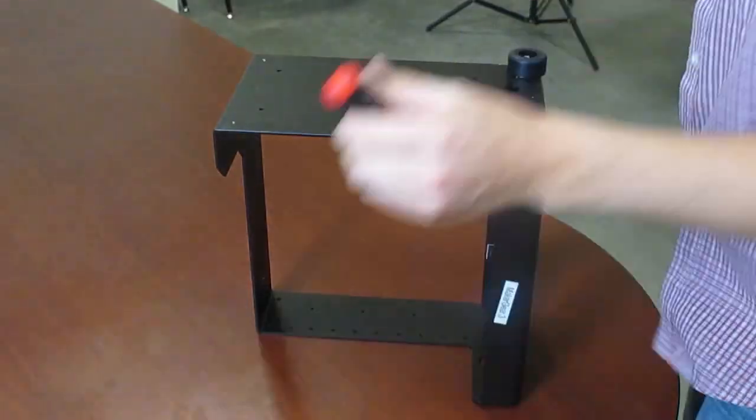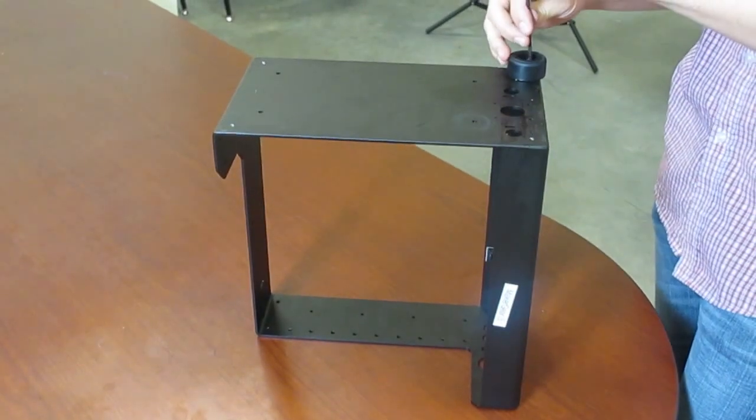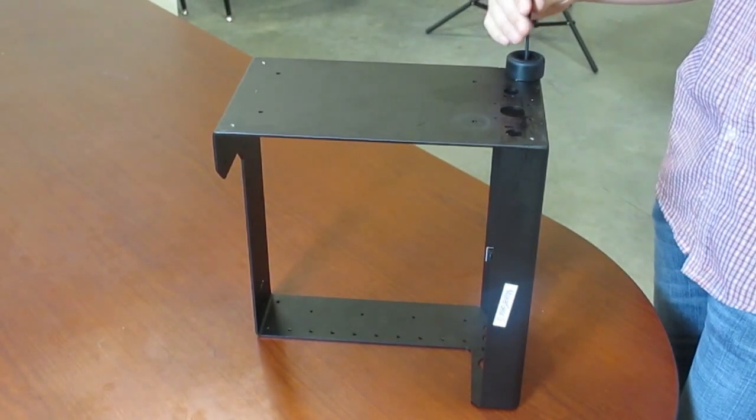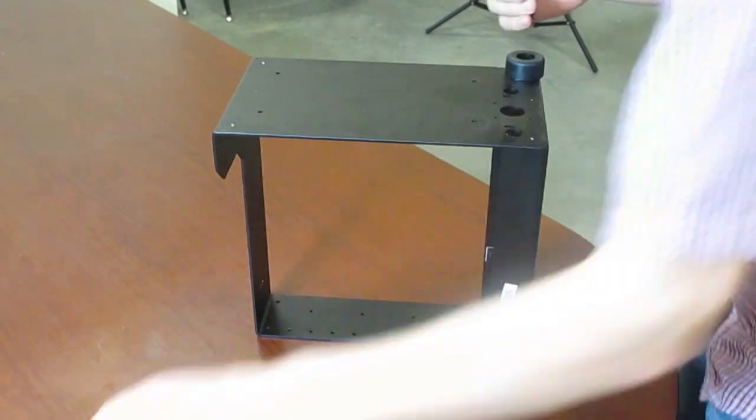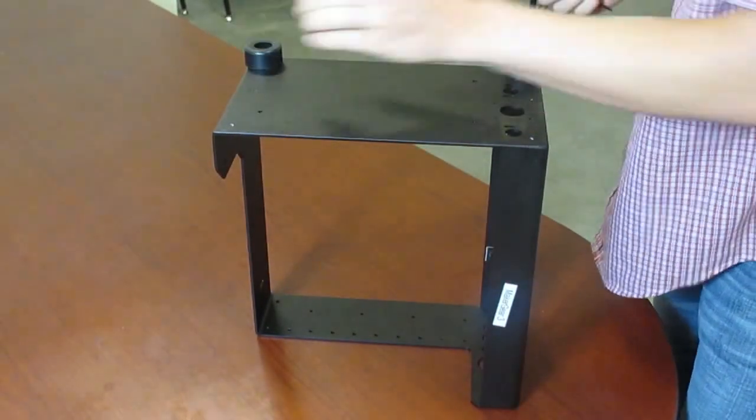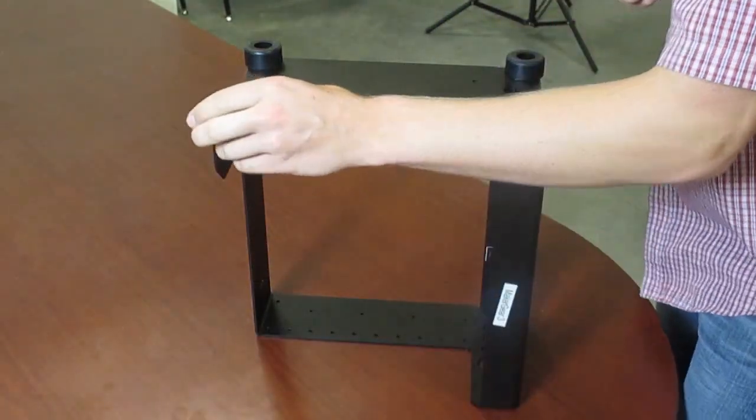Using the included 3mm Allen wrench, go ahead and screw in the first foot. I'm going to do the other three real quick on the corners like this and I'll be right back.